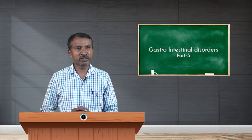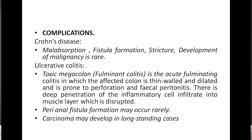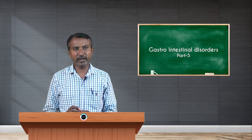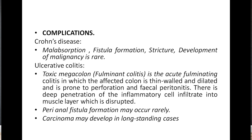Regarding complications: Crohn's disease involves malabsorption, fistula formation, stricture, and rarely development of malignancy. For ulcerative colitis, toxic megacolon — also called fulminant colitis — is an acute fulminant condition in which the affected colon is thin-walled and dilated, prone to perforation and fecal peritonitis, with deep penetration of inflammatory cell infiltrate into the muscular layer.